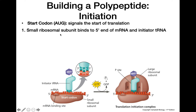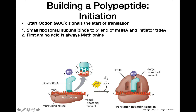Once we've found that, the small ribosomal subunit will bind to the five prime end of the mRNA, and then the initiator tRNA will come in and bind to the start codon. The first amino acid is always methionine, so this initiator tRNA is always going to be carrying methionine.